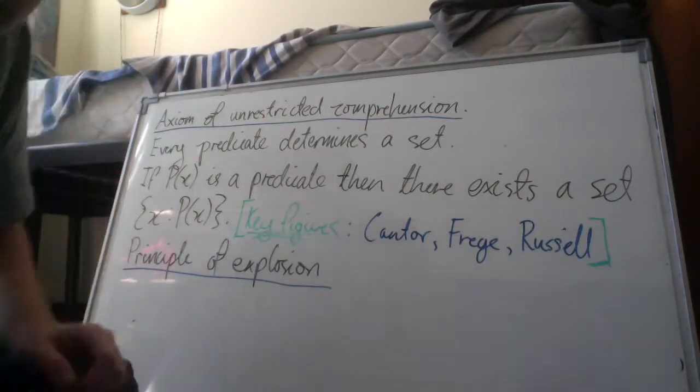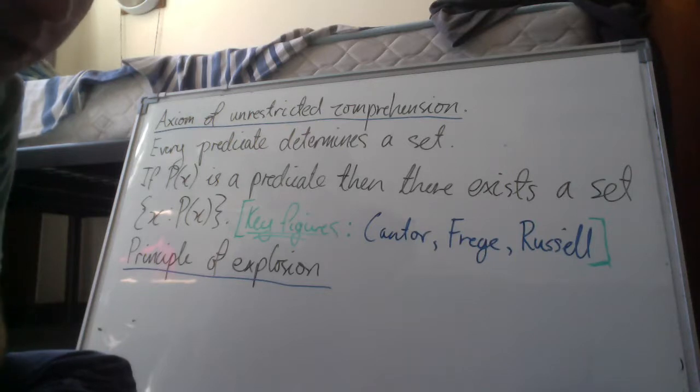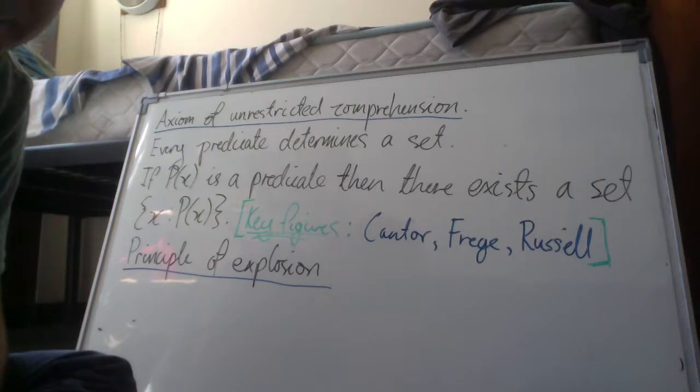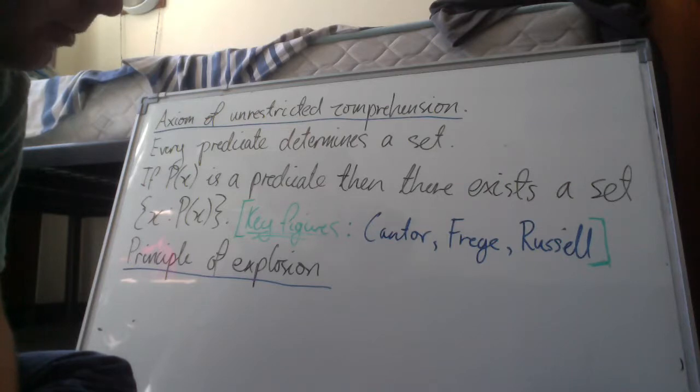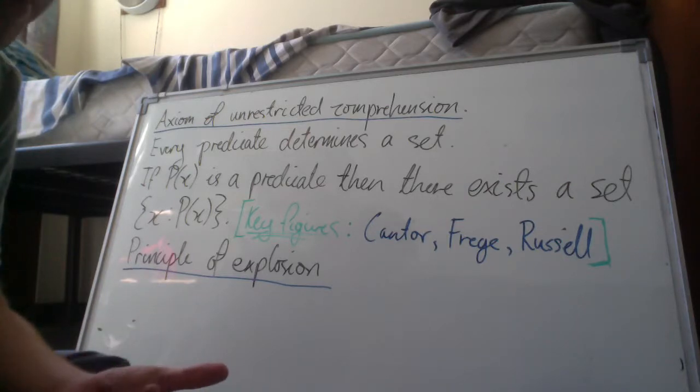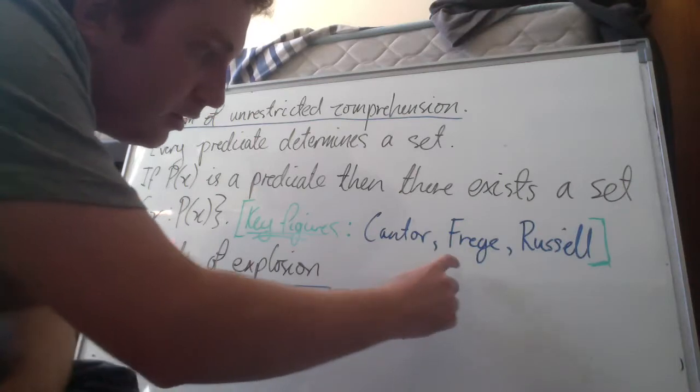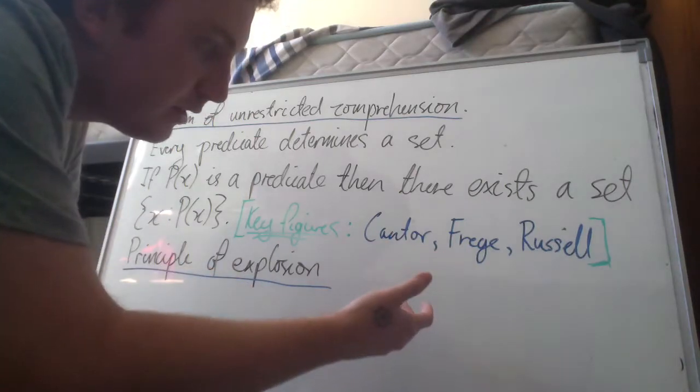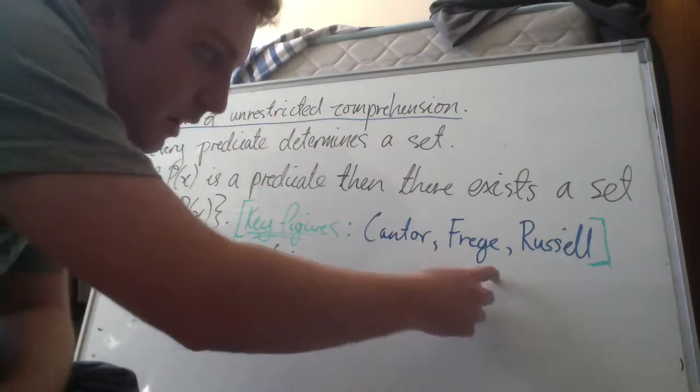This is a possible axiom you could choose to develop set theory and it was implicitly used in the original non-axiomatic treatment of set theory due to Cantor and elaborated on by Frege.